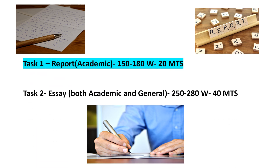So let's take a look at both the tasks. The task 1 for the academic is a report writing and the student has to write 150 to 180 words in 20 minutes. On the other hand, task 2 is an essay, which is both academic and general, 250 to 280 words, and the student has to complete it in 40 minutes. In this video, I'm going to share with you the task 1 report writing for academic.